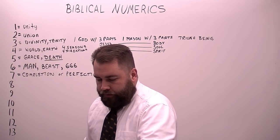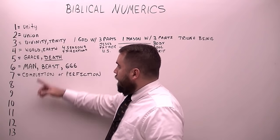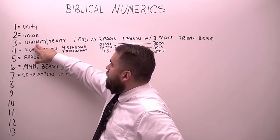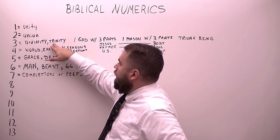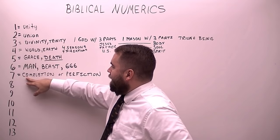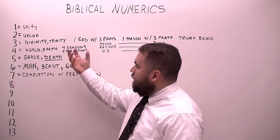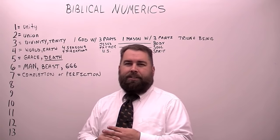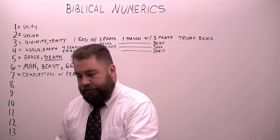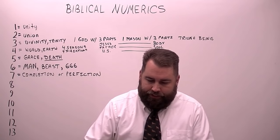Why is seven God's number? It's made up of three plus four — divinity doing something in the world. What does he do? He completes what he wants done. It's interesting how these numbers go together. It's mathematical, it's genius — God, a mathematical genius, through numbers showing us different things.